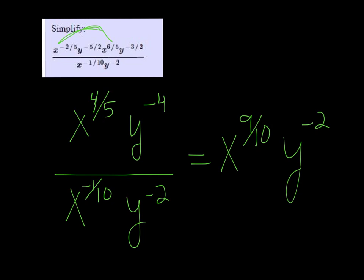They might not want you to have any negative exponents, so we'll go ahead and bring the y down to the bottom and just make it y squared instead of y to the negative 2.